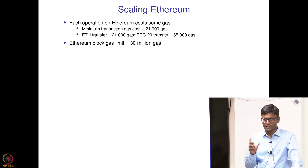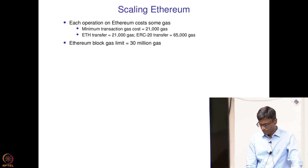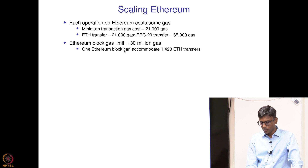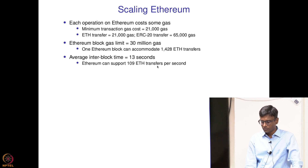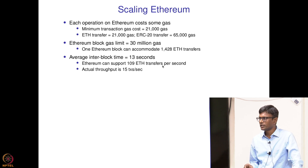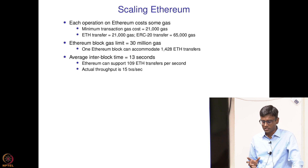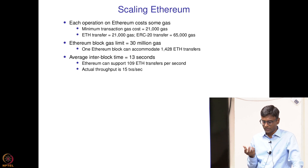Ethereum does not have a block size limit — it has a gas limit, limiting the total number of operations via gas. Dividing 30 million by 21,000, each Ethereum block can accommodate about 1,400 Ethereum transfers. With an inter-block time of about 13 seconds, that works out to 109 transfers per second. But in practice, the actual throughput is only about 15 transactions per second, which is very low for diverse applications.